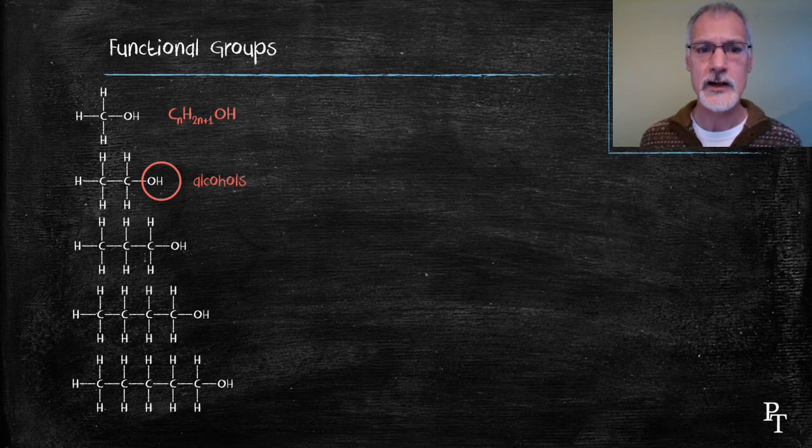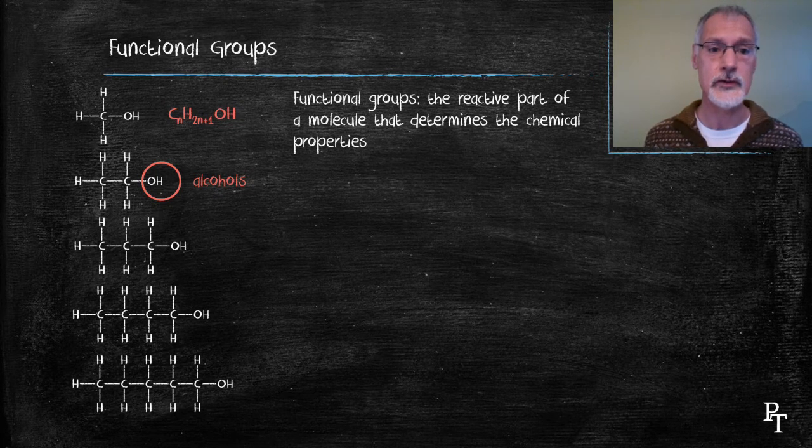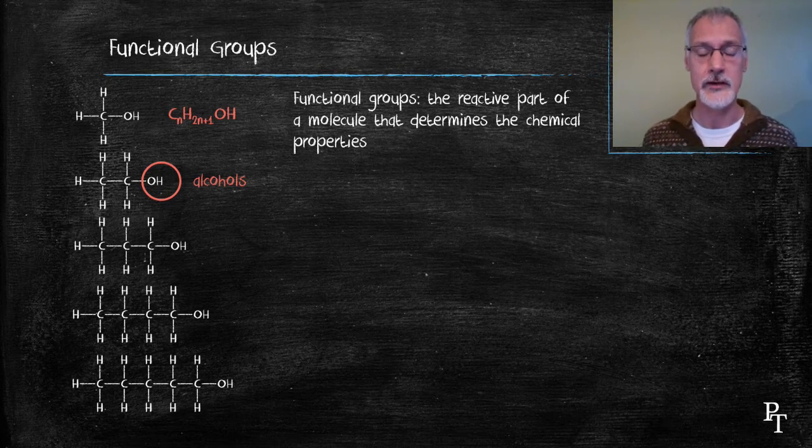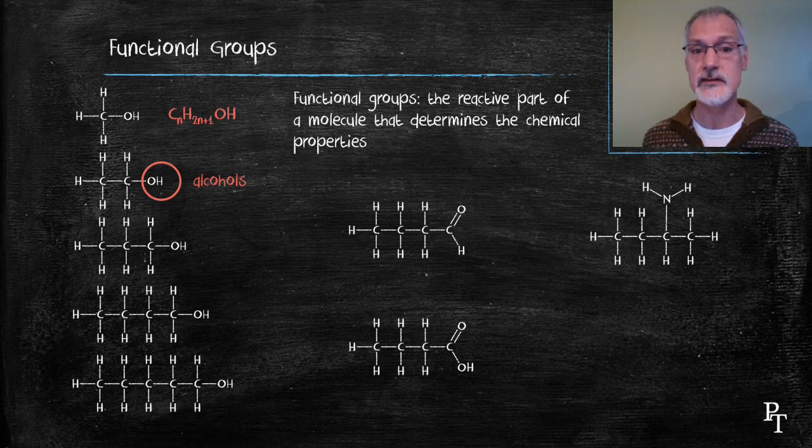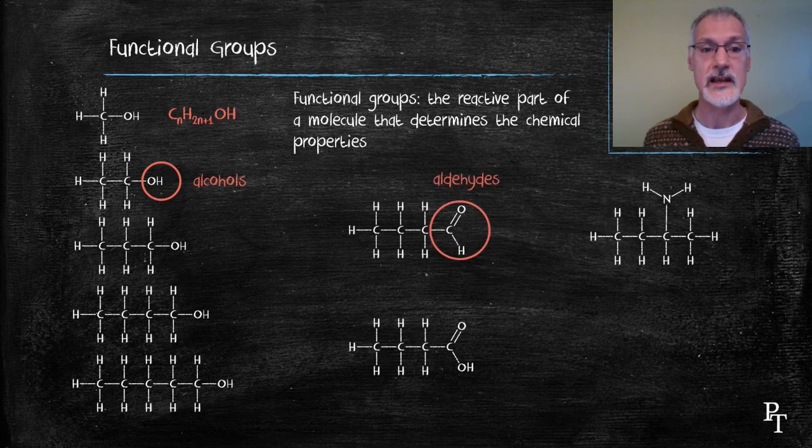This OH group is what we call a functional group. It's the reactive part of a molecule. And there's several of them you'll become familiar with. And I put a few examples down below. First of all, a carbon doubly bonded to an oxygen at the end of a chain. We'll recognize as the aldehyde family.